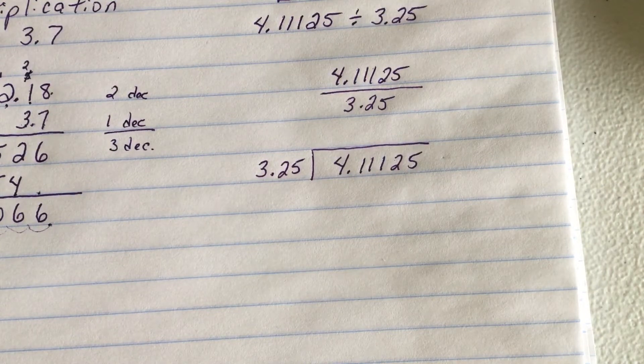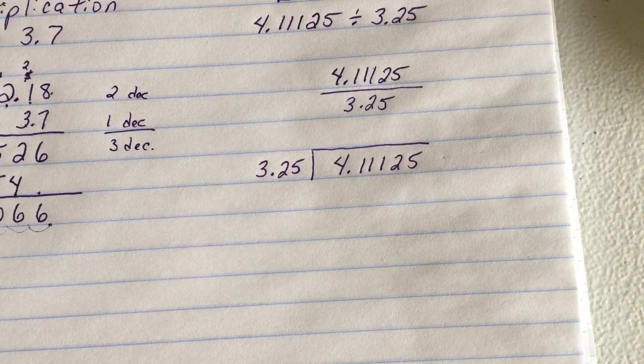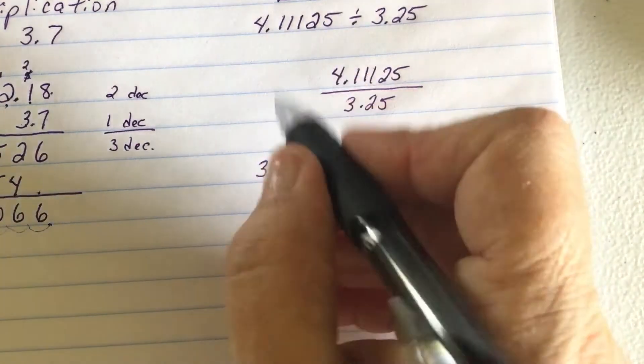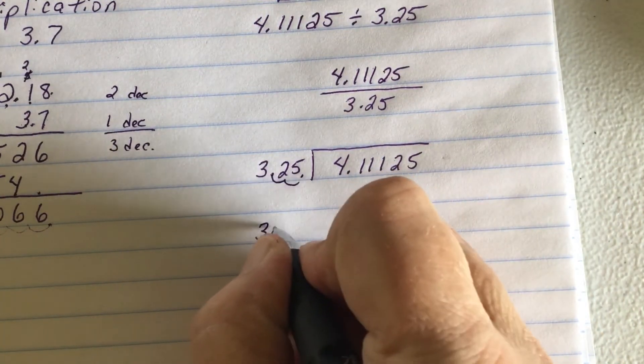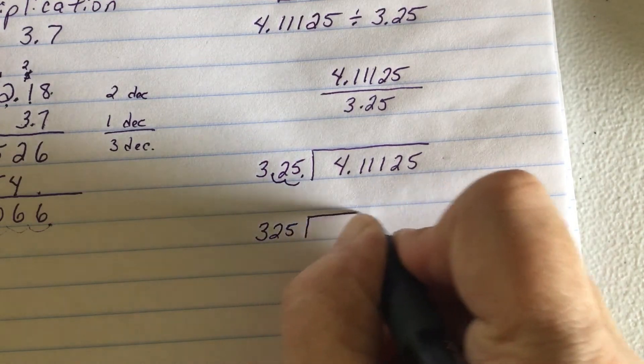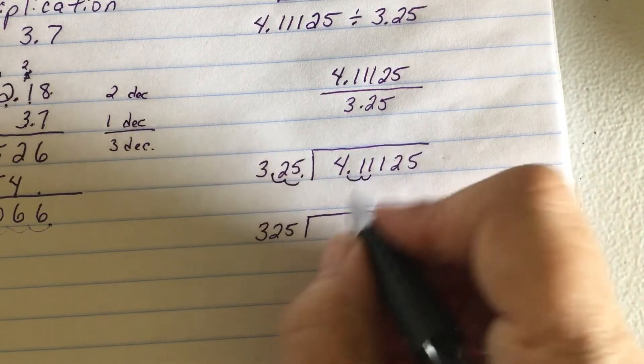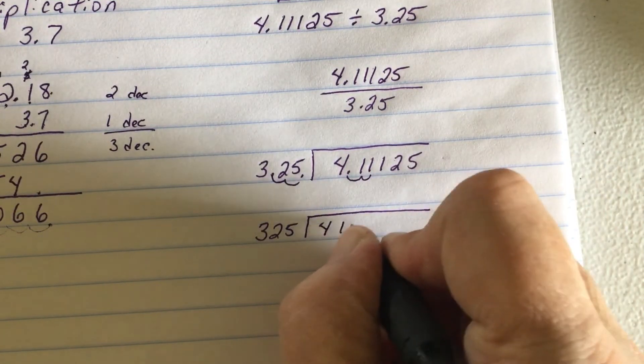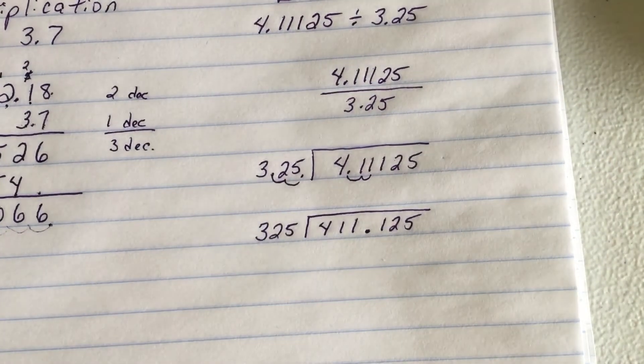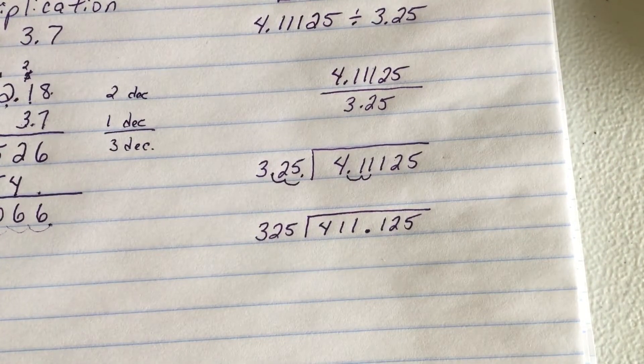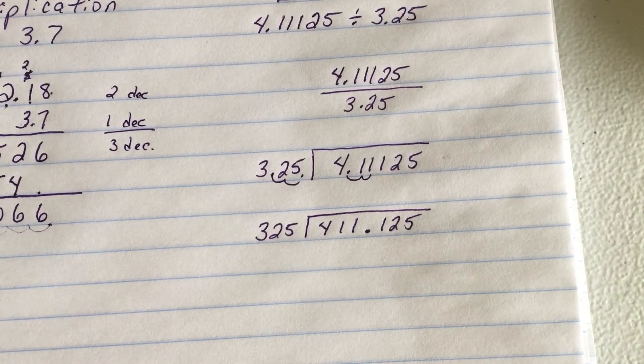First, how we do it is by moving the decimal. So if I move it 2 places here, this becomes 325. That means I have to move it 2 places inside also. So what we do on the outside, we do on the inside. So this becomes 411.125. Next pitfall students do, they forget to move the decimal on the inside. I'm just telling you where most common mistakes happen.